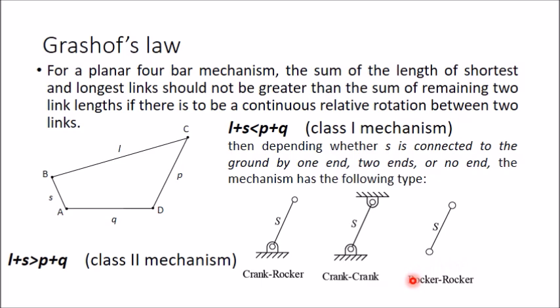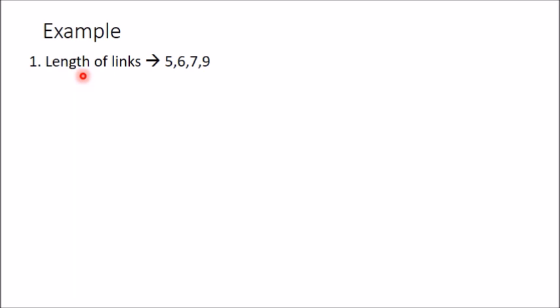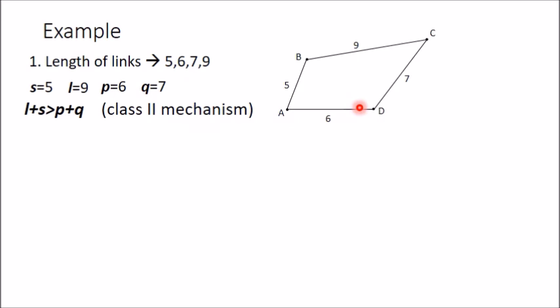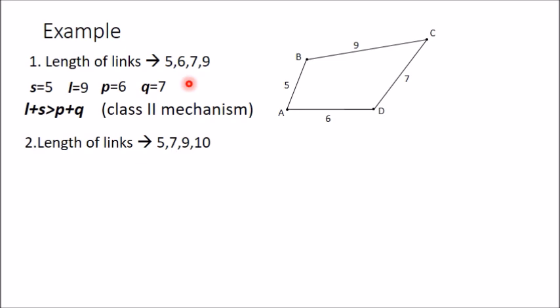Example 1: link lengths are 5, 6, 7, and 9. The smallest link is 5 and the largest is 9, with intermediate links 6 and 7. Checking: L plus S = 9 + 5 = 14, which is greater than 7 + 6 = 13, so this is a Class 2 mechanism. Therefore, whatever link you fix — AD, AB, BC, or DC — you will always get a double-rocker mechanism.